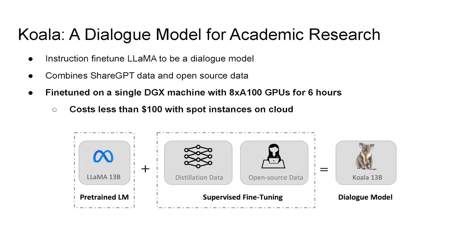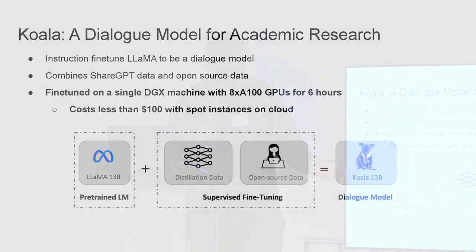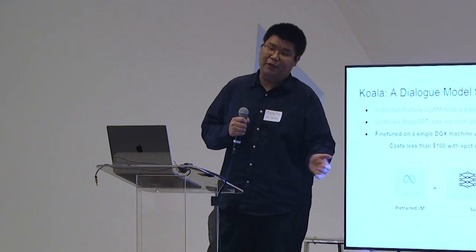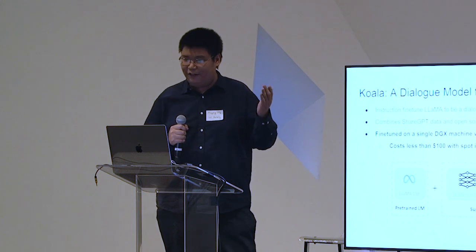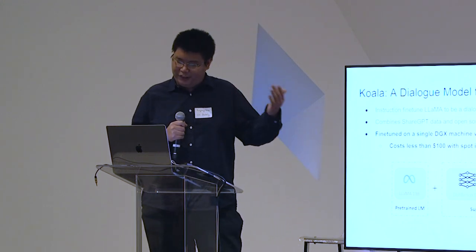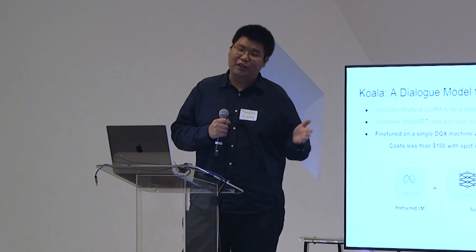The first model is what we call Koala, a dialogue model we trained here at UC Berkeley. It's essentially similar to various fine-tuned LLaMA variants, including Alpaca and Vicuna. We took shared ChatGPT data online and fine-tuned LLaMA to become an instruction-following model. The fine-tuning is very cheap — it runs on a single 8-GPU machine for only six hours. This means you can do a complete fine-tuning run for less than $100 on cloud with spot instances. I'm pretty sure any company can afford this cost.